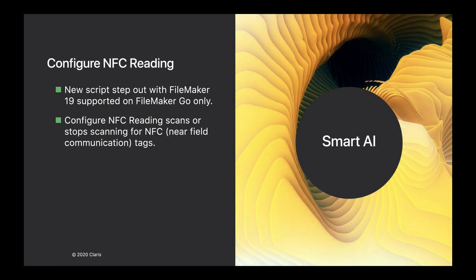The new script step we've put together is called Configure NFC Reading. It's supported on FileMaker Go 19 only for the time being. Eventually, if there's demand for FileMaker Pro access, we'll see whether we can get that to work. Configure NFC Reading is actually quite simple — it scans, or will stop scanning for NFC tags. NFC tags use near-field communication.